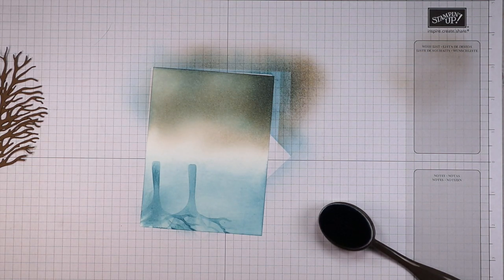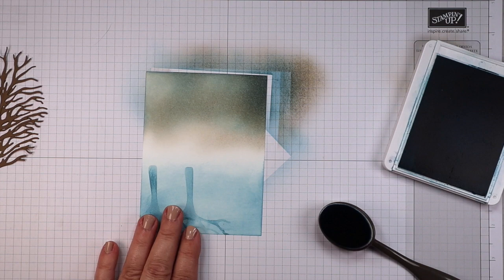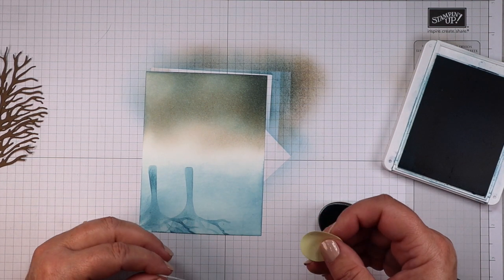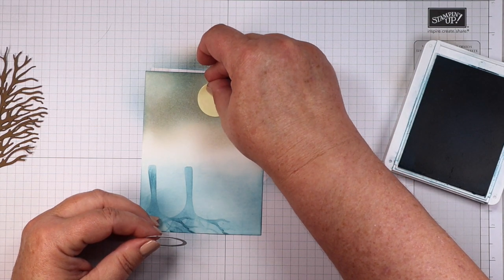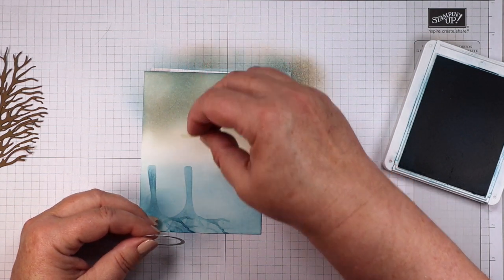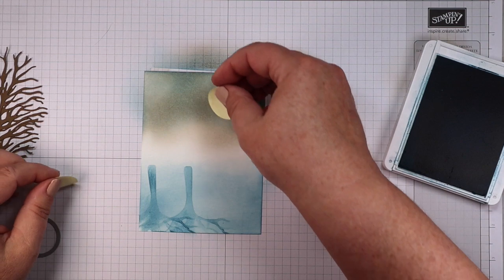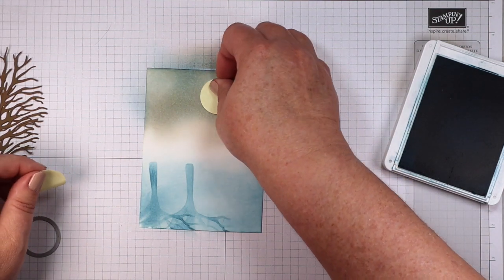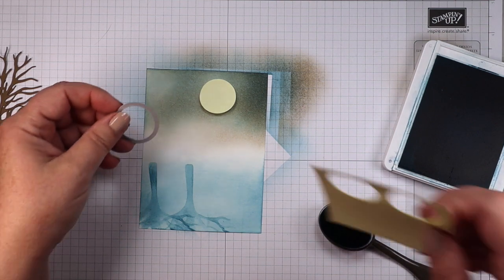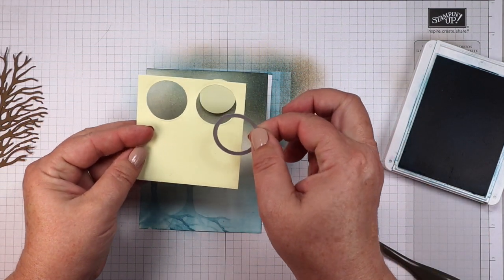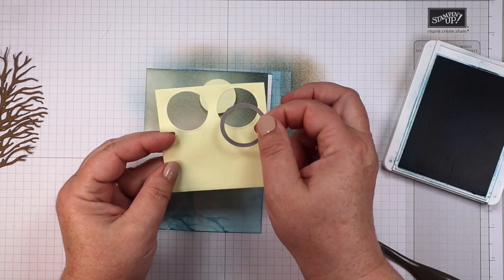There we go and now I need my moon shape in there, so I'm going to put my moon mask on here. I want it pretty much towards the top. And I cut that out of a double layer of post-it notes using the smallest circle in the layering circle dies, and this is a one and a quarter inch circle. So you could use your punch if you have a punch of that size too.